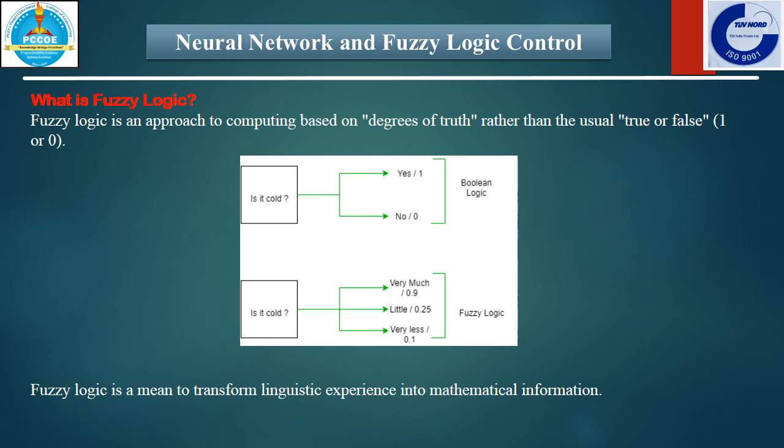Fuzzy logic. The word fuzzy refers to ambiguity and vagueness. In classical set theory, the solution is always yes or no, that is zero or one. But when we are dealing with real life situations, we can't determine whether the state is true or false. So in such situations, fuzzy logic provides valuable flexibility for reasoning. In this way, we can consider the inaccuracies and uncertainties of any situation.